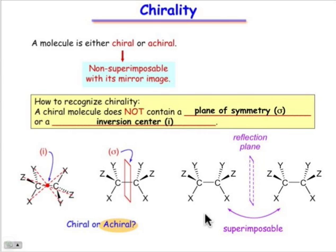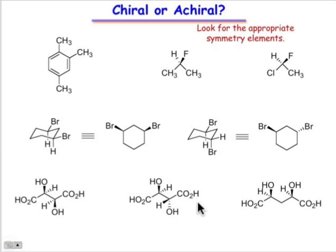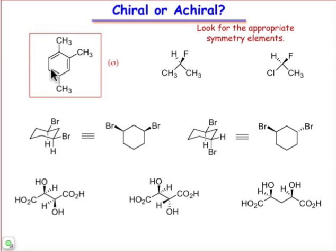Now go ahead and try to apply those ideas to the set of molecules shown here. For this first case, we can find a mirror plane, and that mirror plane happens to be in the plane of the benzene ring. Those six atoms in the benzene ring and each of the three carbon atoms are in the plane, and atoms that are in the plane upon reflection don't move. So there's no difference in the position of the atoms before and after reflection, and we conclude that this molecule possesses a plane of symmetry.